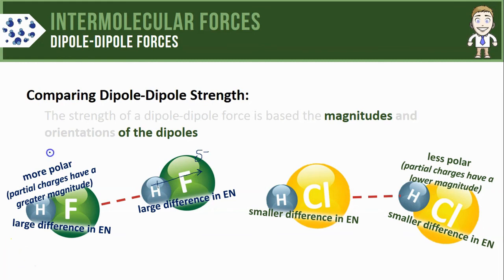And finally since the partial negatives and partial positives in HF have greater magnitudes that's going to be the stronger dipole-dipole force and this will be the weaker of the two.